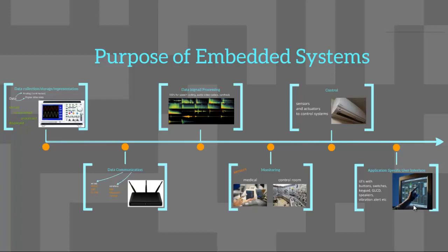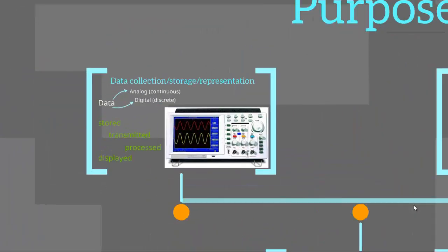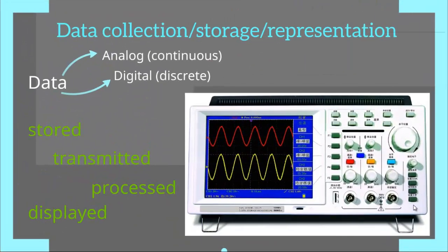Based on the purpose for which embedded systems are designed, there are six main areas to note. Data can either be analog — that is, continuous — or digital — that is, discrete. A range of applications work with data collection, storage and different forms of representation. For example, consider a digital oscilloscope: it is used to store data in USB drives, it can transmit data to a PC directly using serial communication interfaces, it processes the data to find out RMS value, mean value, average value, etc., and it also displays the measured data on a graphic LCD screen.